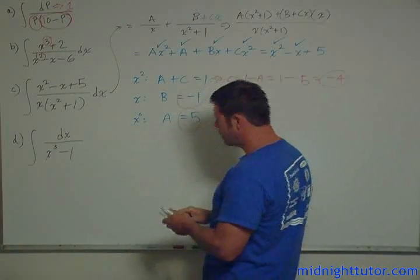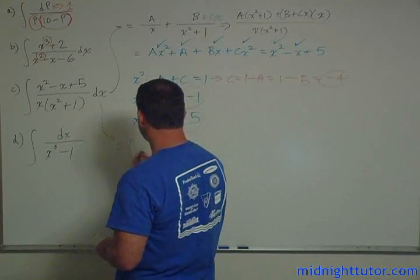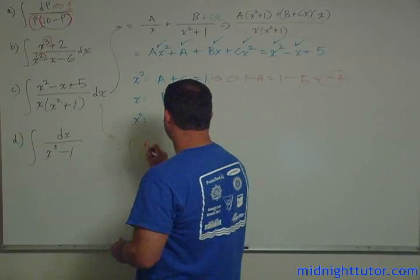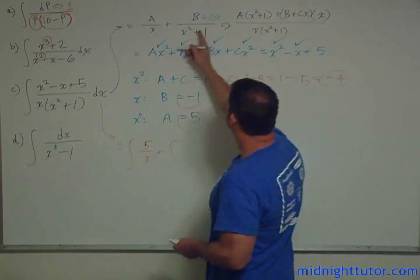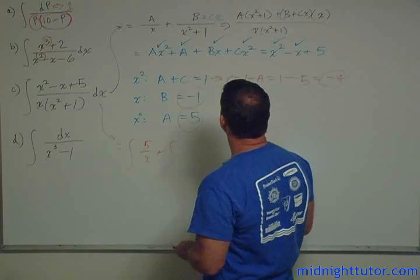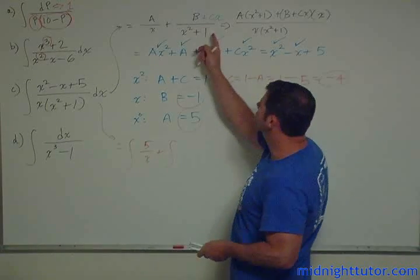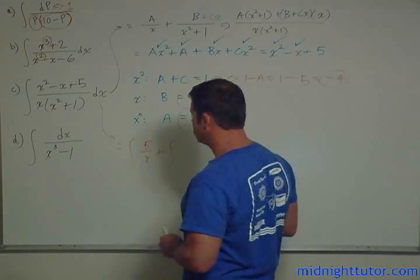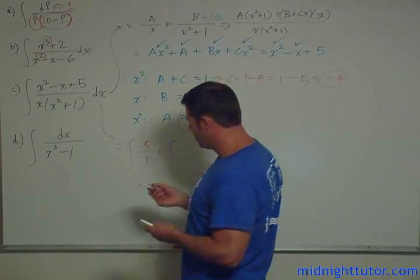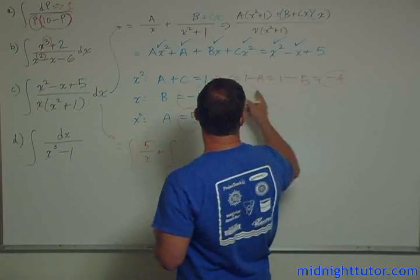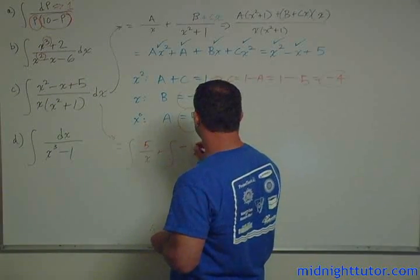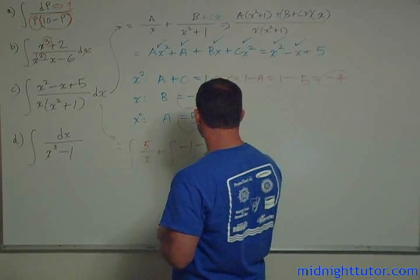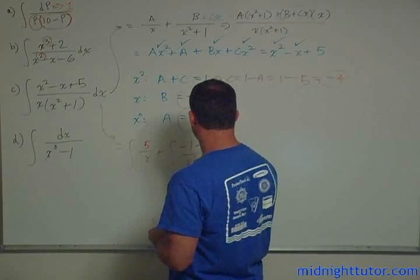So now we've said that this integral becomes the integral of A is 5, 5 over x plus the integral of Bx plus C, right? So now here again, we can just, well, let's not skip any steps. It's always the algebra that kills you anyway. B plus Cx, B is minus 1, so minus 1, C is minus 4, x over x squared plus 1.